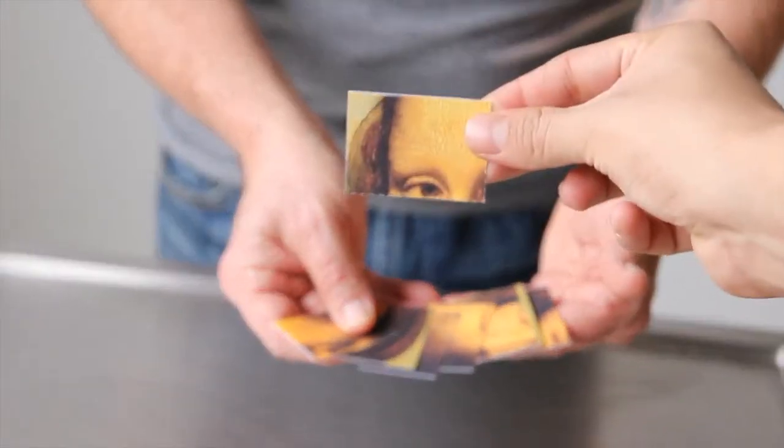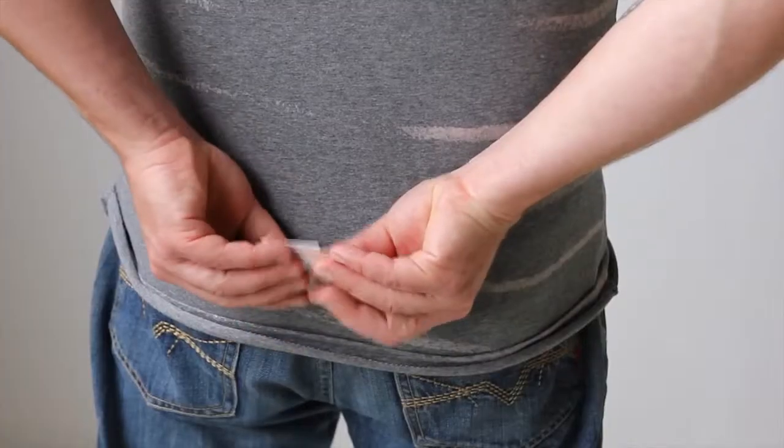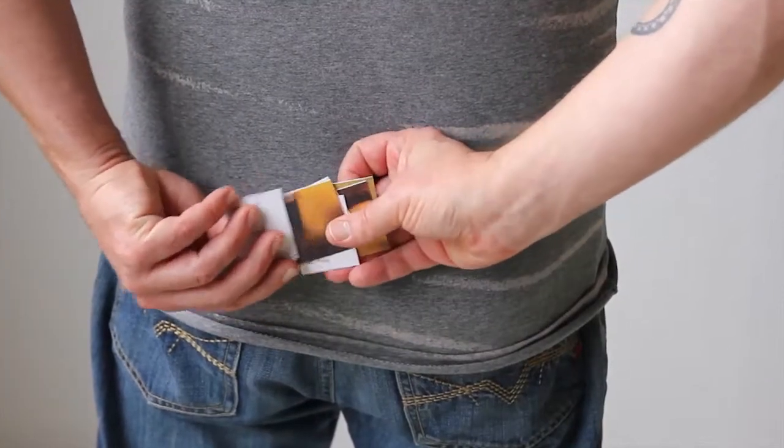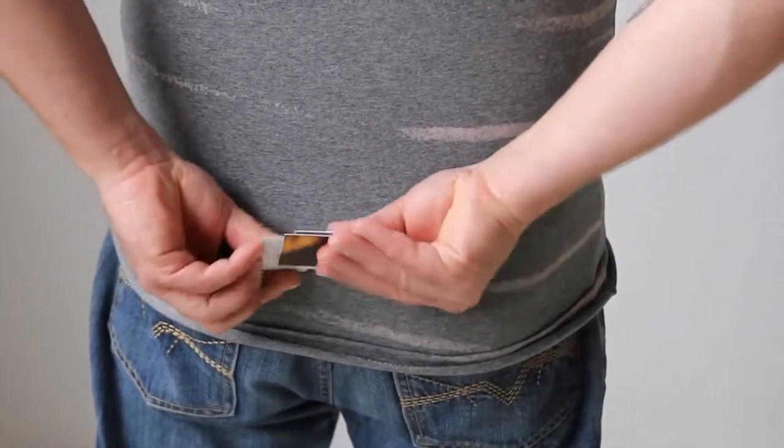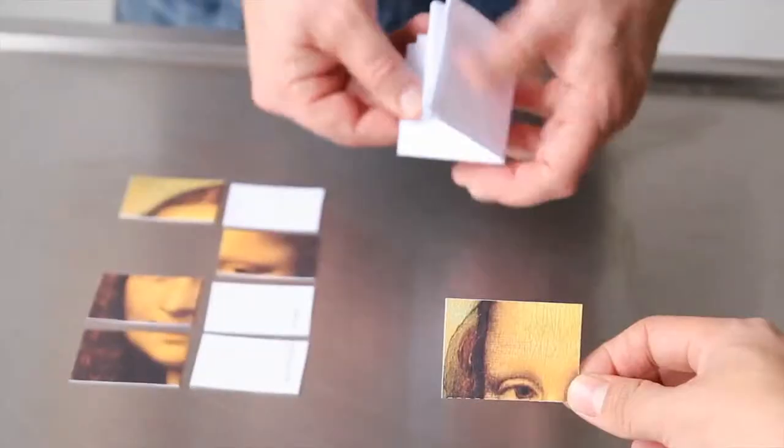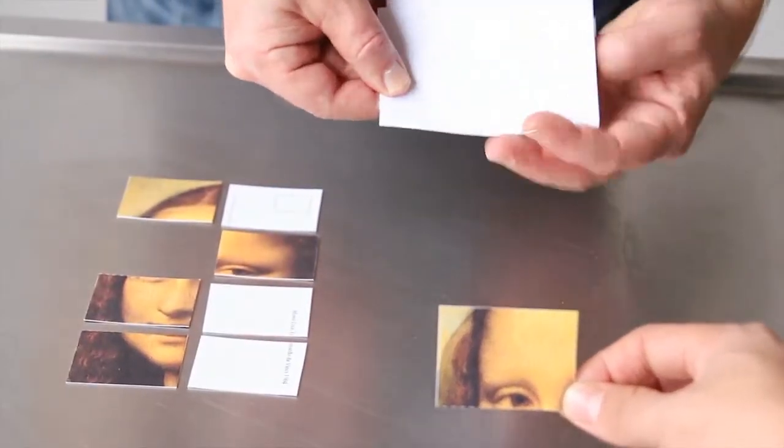A spectator selects one of the pieces and a folded prediction is introduced. Another spectator is asked to hold the remaining pieces behind your back and give them the ultimate fair shuffle, mixing their order and also randomly turning them over.